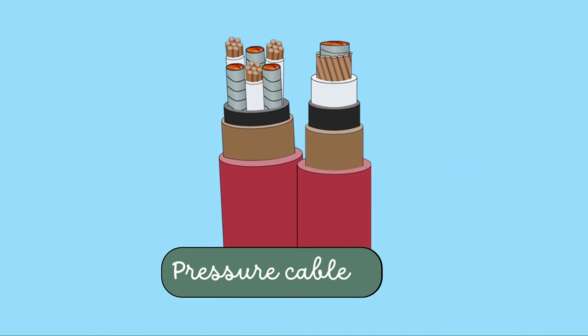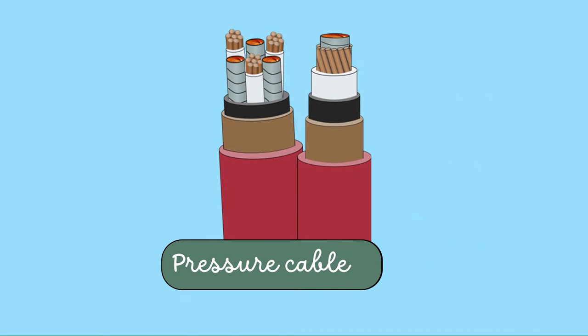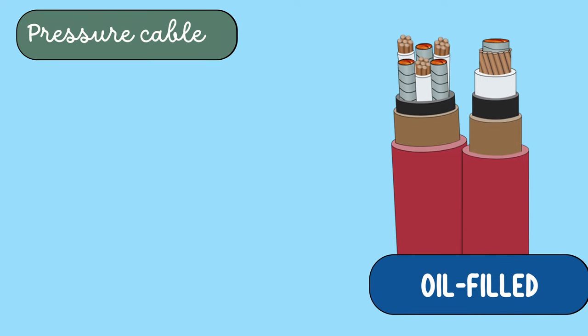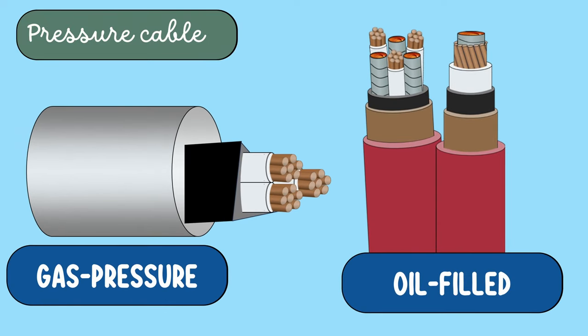Instead, pressure cables are used. In pressure cables, the voids are eliminated by increasing the pressure of the component. It can be done either using oil or gas. Accordingly, they are classified into oil-filled cables and gas-pressure cables.